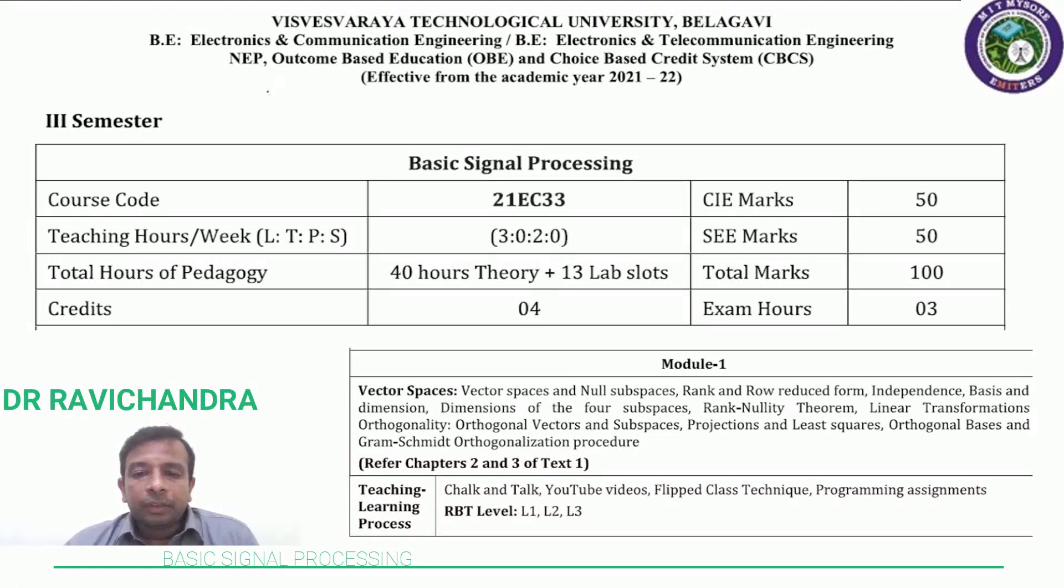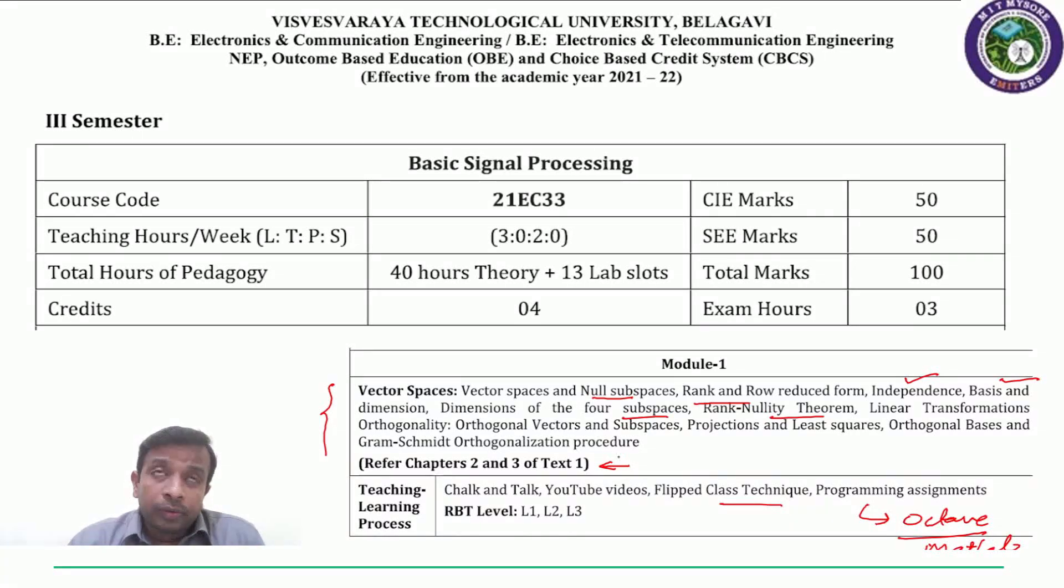Module one consists of vector spaces, null spaces, rank and row reduced form of matrix, linear dependence and independence, basis and dimension, rank nullity theorem, linear transformations, orthogonality, orthogonal vectors and subspaces, projections and least squares, and Gram-Schmidt orthogonalization procedure. We will be using YouTube videos, flipped class technique, and programming assignments using Octave, which is an open source alternative for MATLAB and a very versatile tool for signal processing.